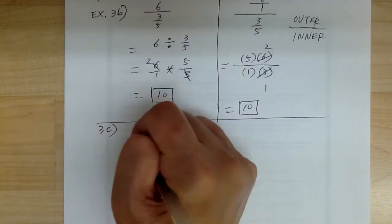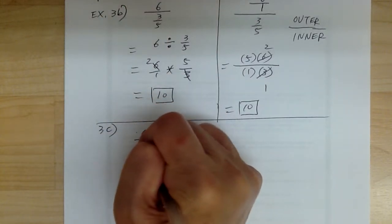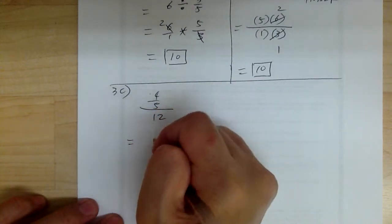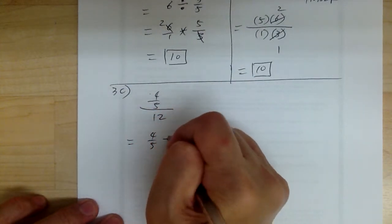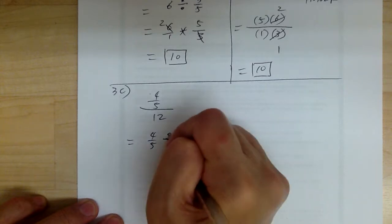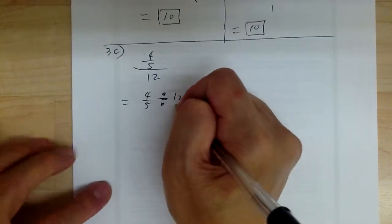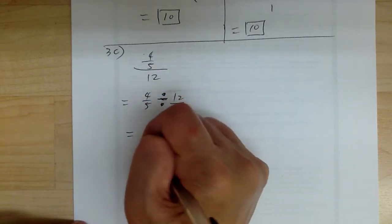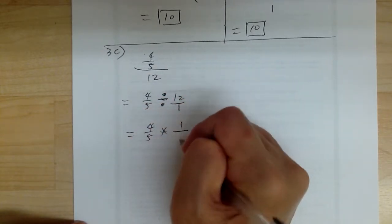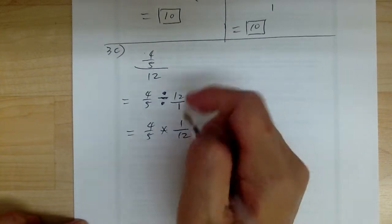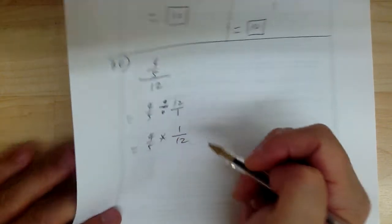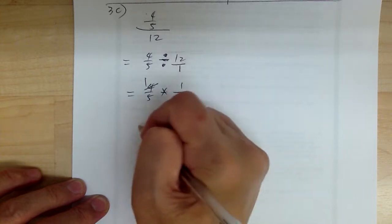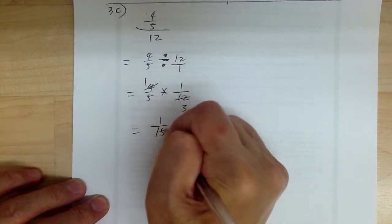Example 3C: you have 4 over 5 divided by 12. So if you convert, you get 4 over 5 divided by 12. I'm going to make this into 12 over 1 so it's easier to flip it over. So this equals 4 over 5 times 1 over 12. Now 4 and 12 are both divisible by 4: divided by 4 you get 1, divided by 4 you get 3. So the answer is 1 over 15.